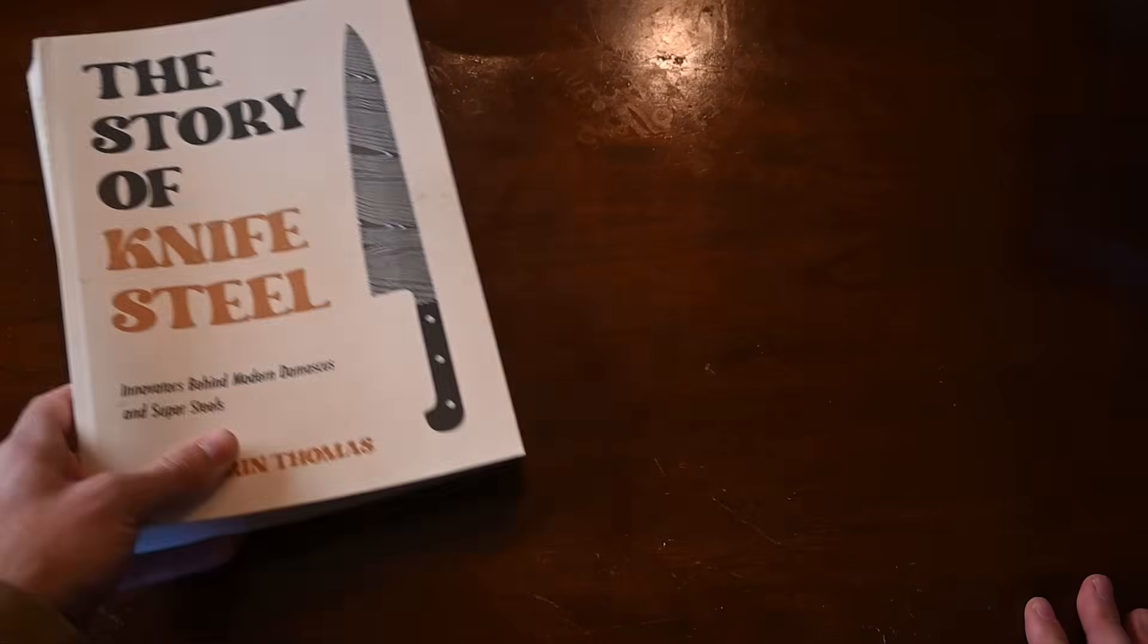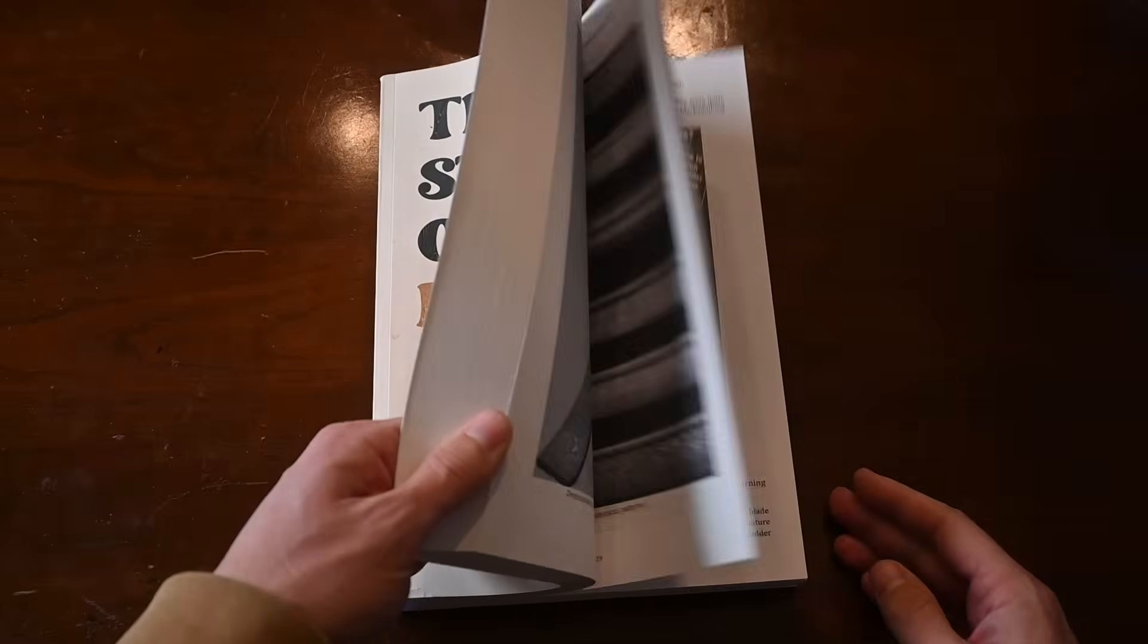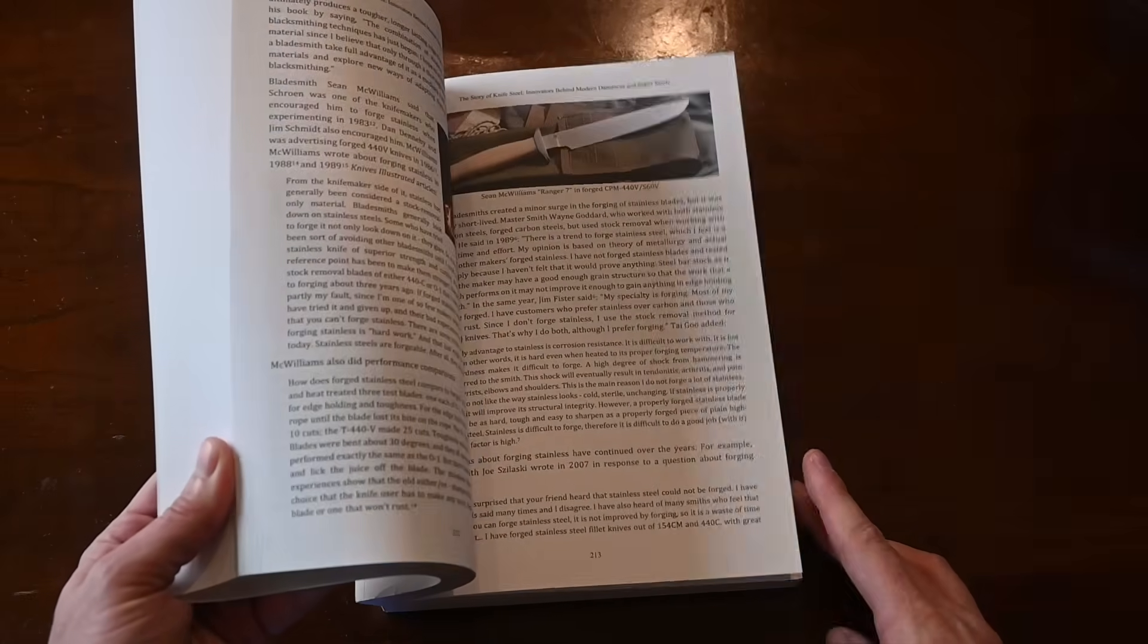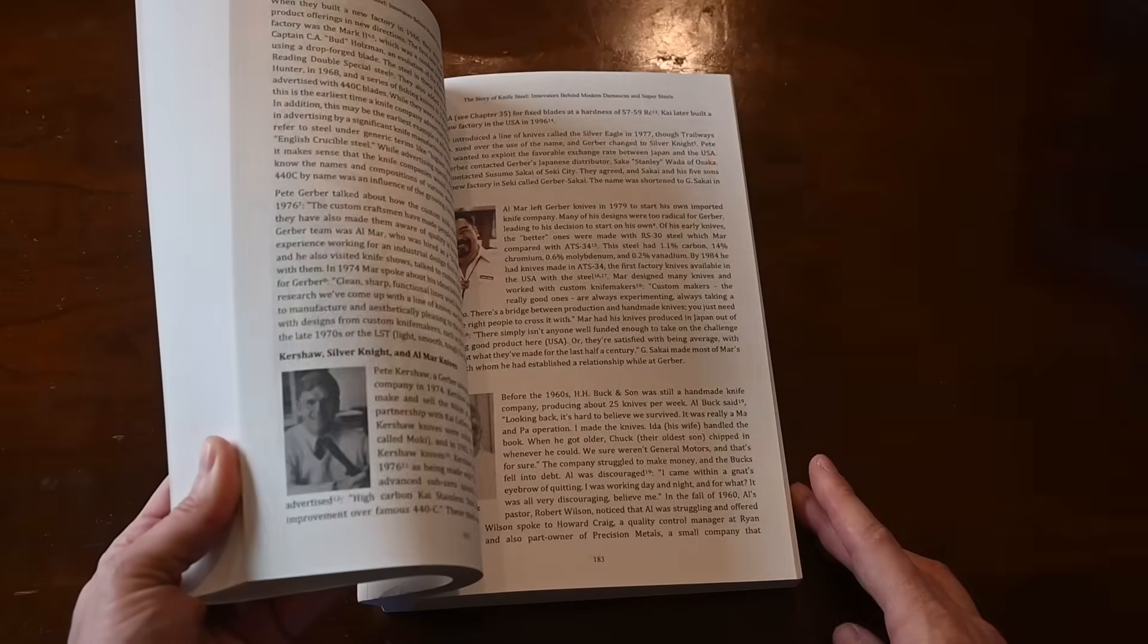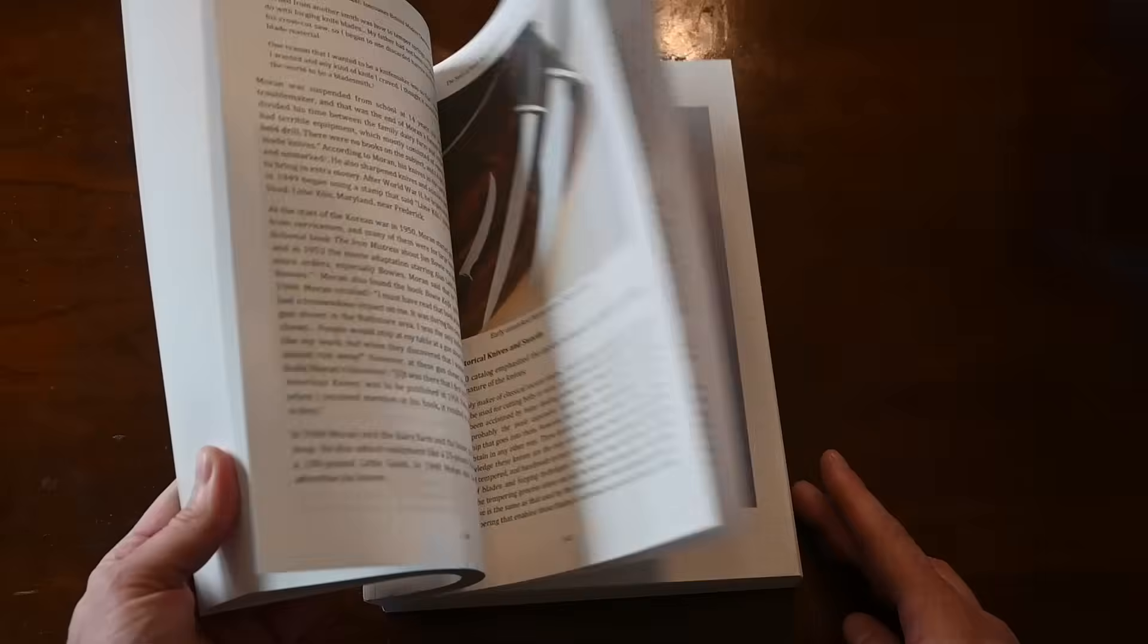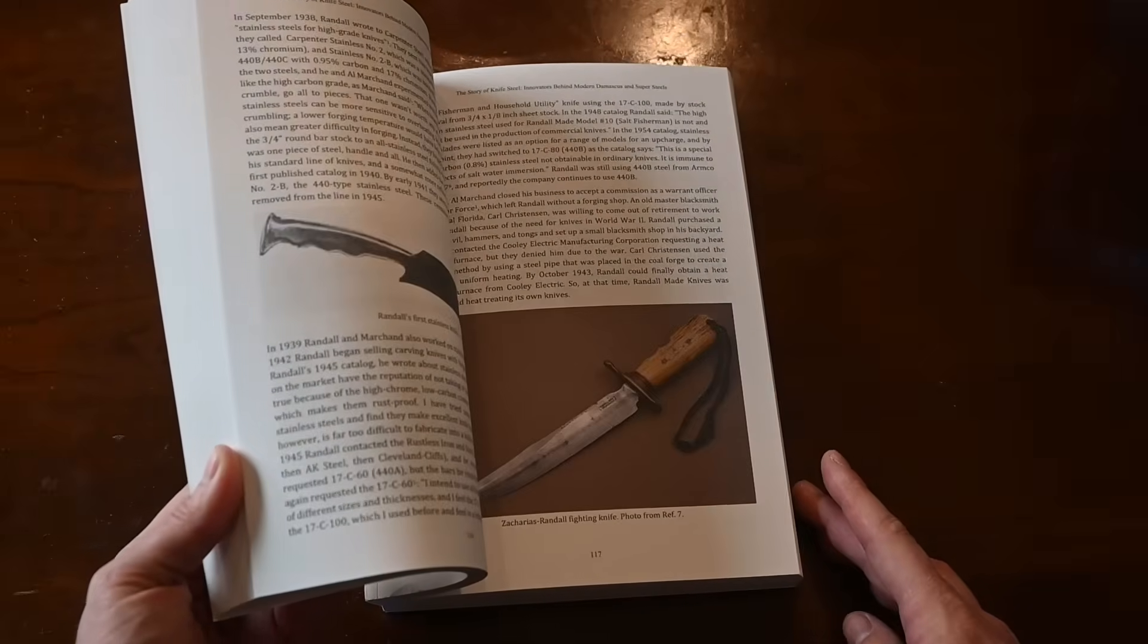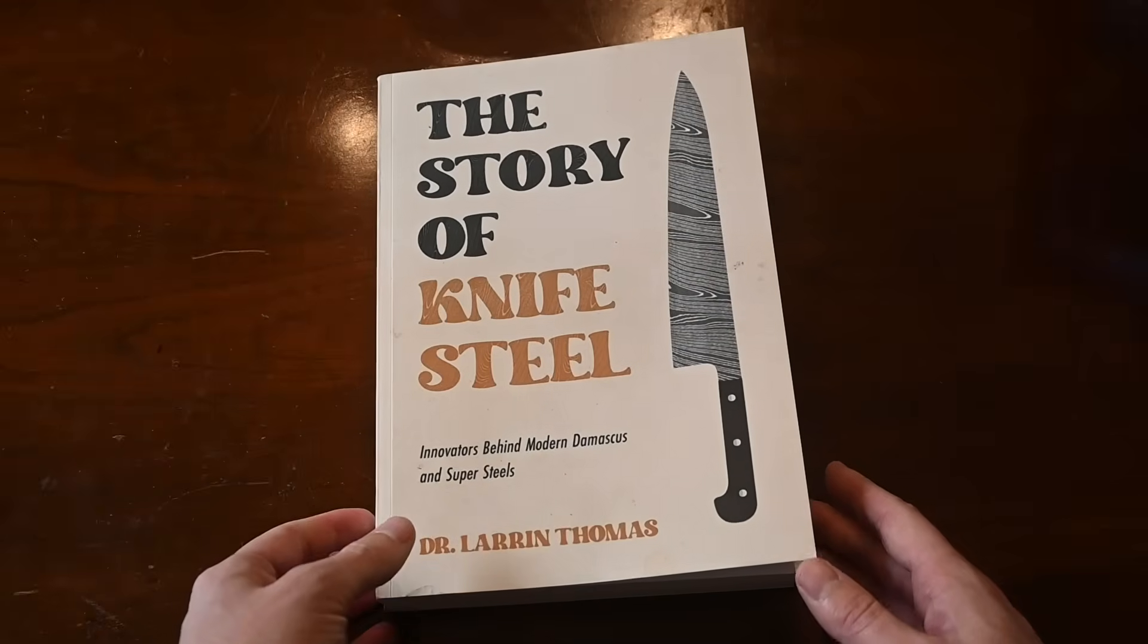Then also there is a PDF bundle where you can get The Story of Knife Steel, my other book, along with Knife Engineering second edition in one bundle. That is by far the cheapest way to get both of those together. So this book is not about heat treating necessarily—it's about knife makers and metallurgists, how they innovated and developed new things.